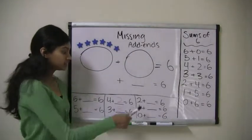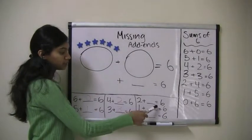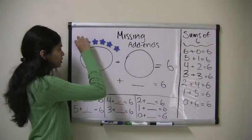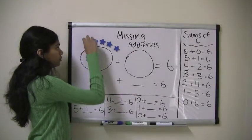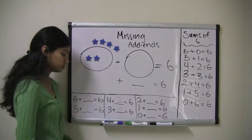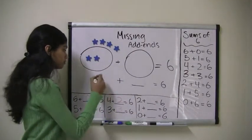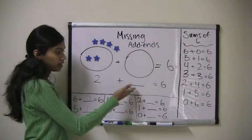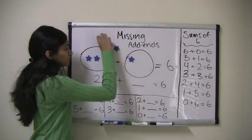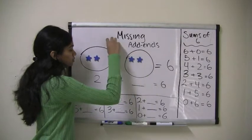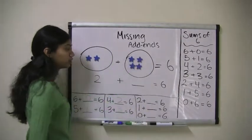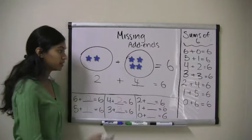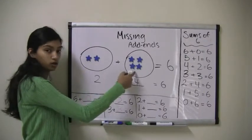Our next problem is 2 plus what equals 6? So, I must put 2 stars in the first area: 1, 2. That leaves 1, 2, 3, 4 stars in the second area. So, 2 plus 4 equals 6.